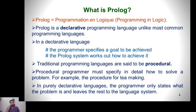For example, consider the problem of making tea. In a procedural language, you have to write the complete procedure for making tea. But in a purely declarative language, the programmer only states what the problem is and leaves the rest to the language system. In Prolog programming, you only specify what you want to get from the Prolog system and all the computations and procedures are handled by the Prolog system.